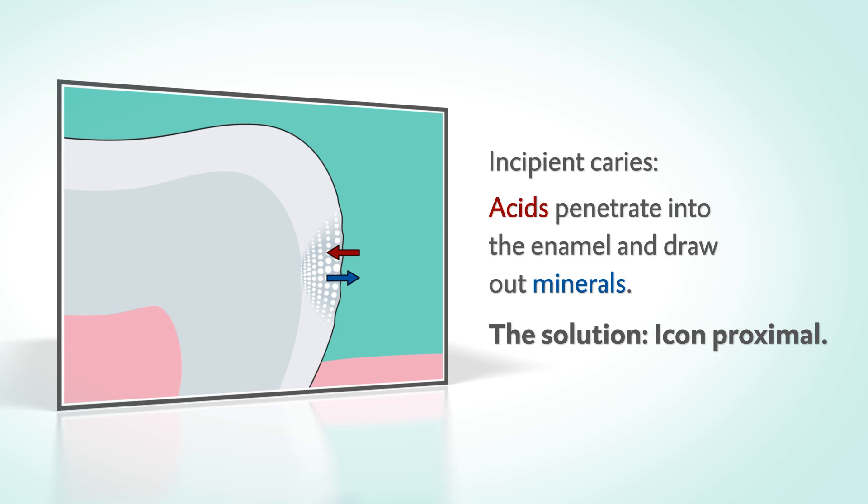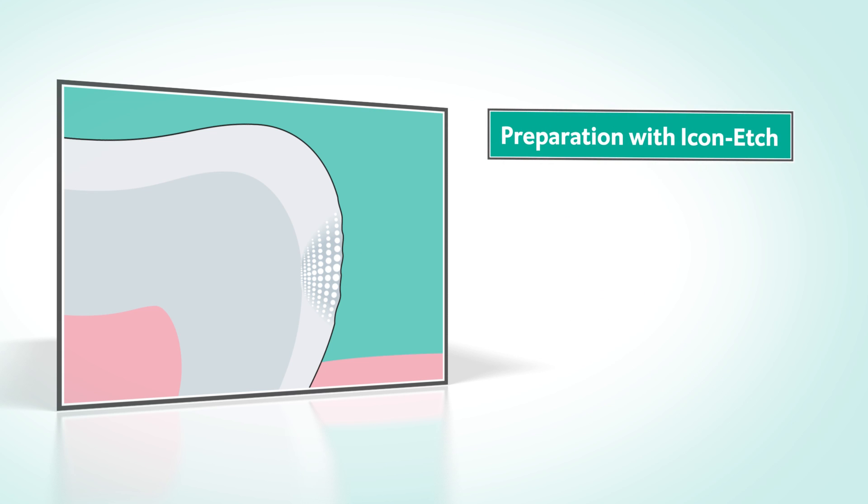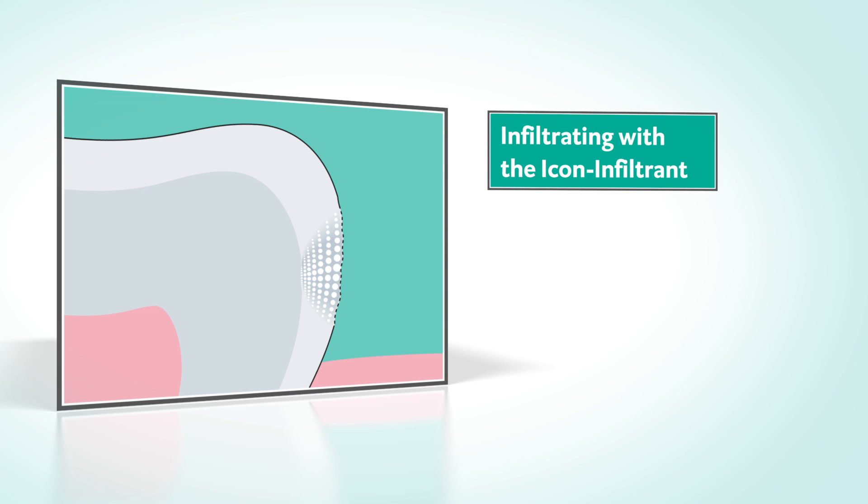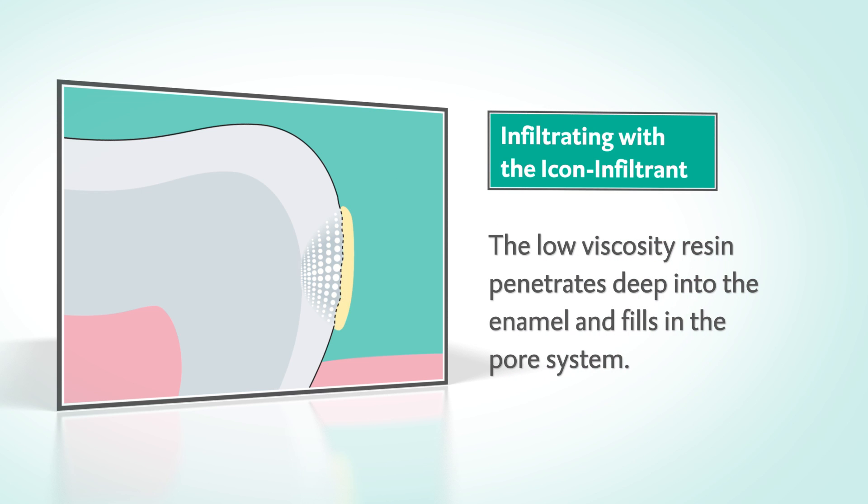Icon Proximal can stop this process. Application is simple. First, the tooth is prepared with Icon Etch. Then the area is carefully dried with air and ethanol Icon Dry. Now the low-viscosity Icon infiltrant can penetrate deep into the enamel.